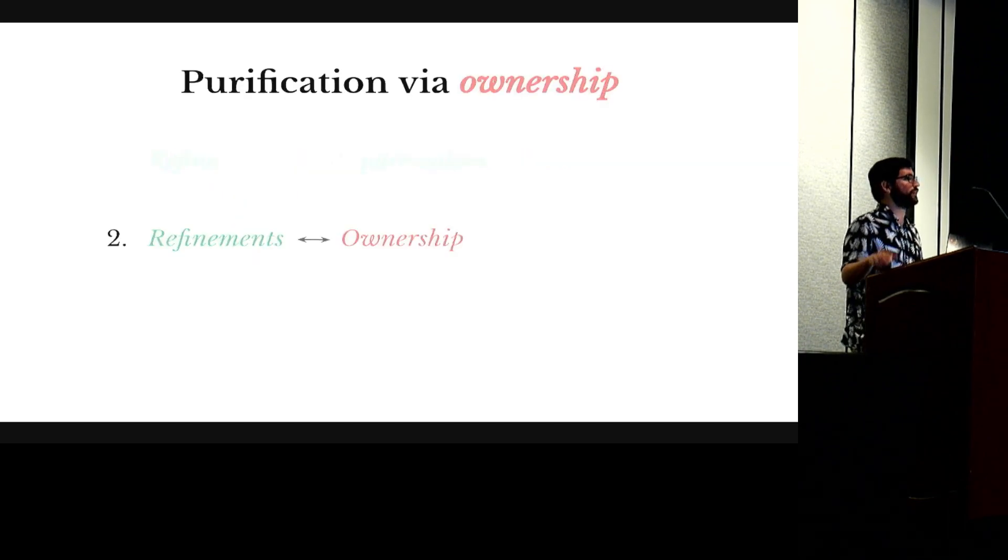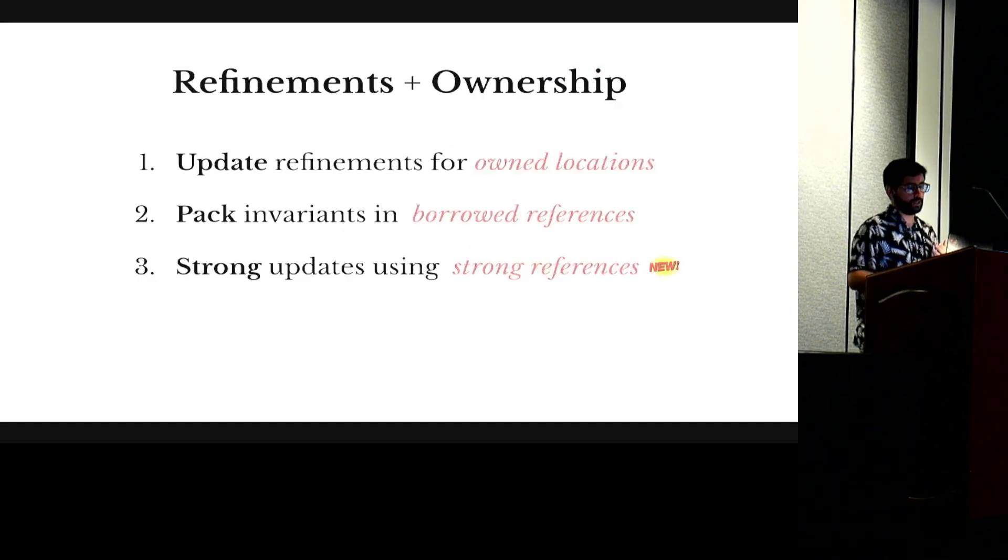So those are basically the refinement extensions we have to the type system. So let's move on to how they interact with the ownership mechanism of Rust. I'm going to talk about three different mechanisms. The first two that I'm calling owned locations and borrowed references are standard Rust concepts. What is new here is how they interact with refinements. The third one that I'm calling strong references is something new that we have to add to the Rust ownership system to handle some cases that arise in refinement type checking.